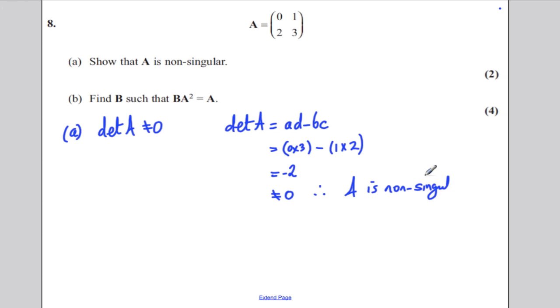What is being non-singular all about? Well, A is non-singular, that tells us that A has an inverse. So A to the minus 1 exists. That's what we know given A is non-singular. There are two marks. All we have to do is work out the determinant, say it's not equal to zero, and therefore A is non-singular.